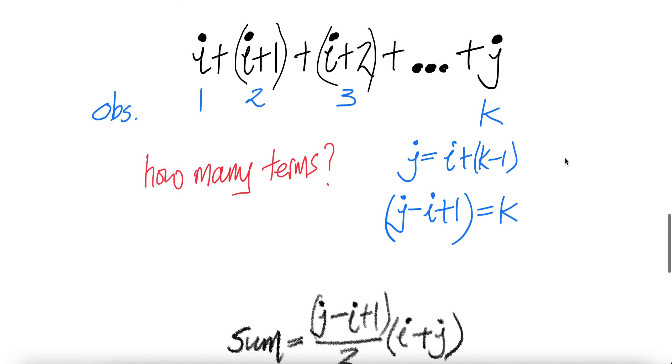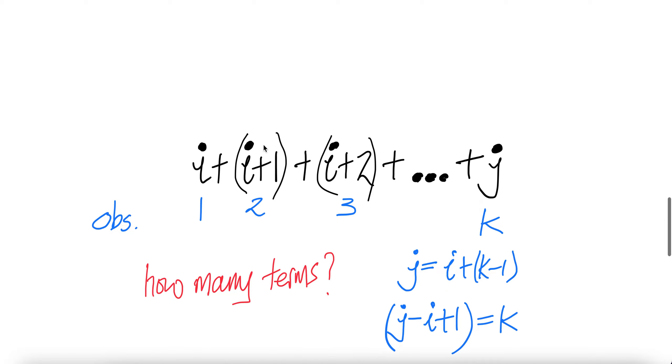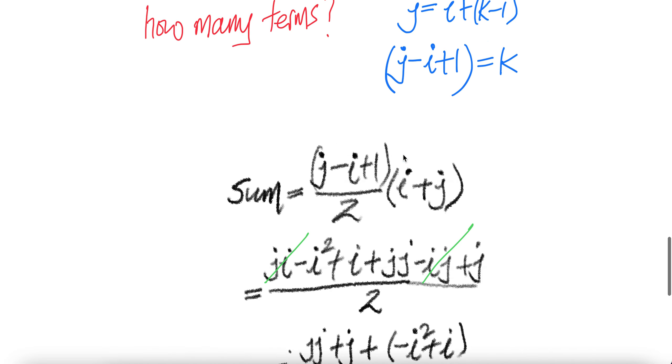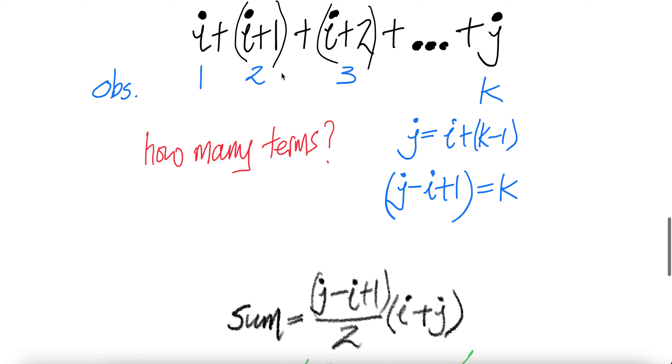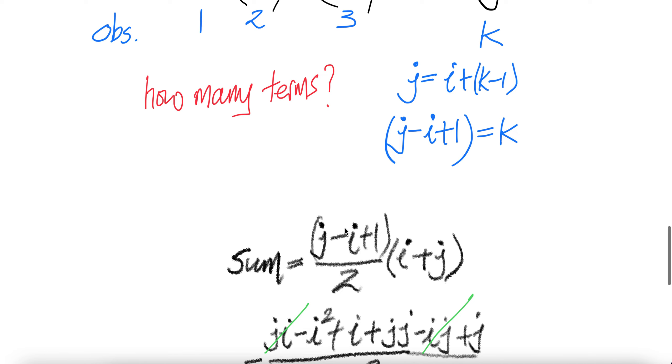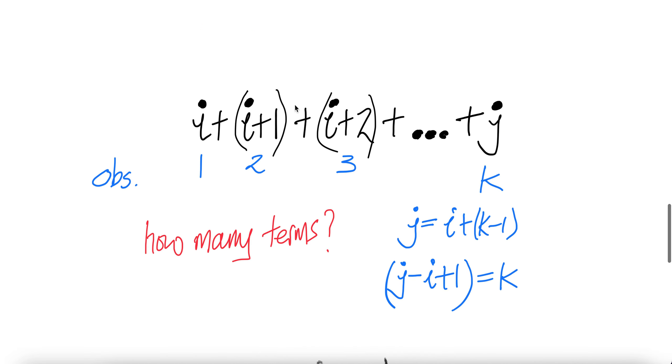Therefore, the value of these when you sum them, since this is arithmetic progression with first term I and common difference one, is given by the number of terms. As we just mentioned, there are J minus I plus one terms, divided by two. The first term is I, the last value of the last term is J. So when you have J minus I plus one number of terms divided by two, times the first term plus the last term, this will get you the value of the sum.